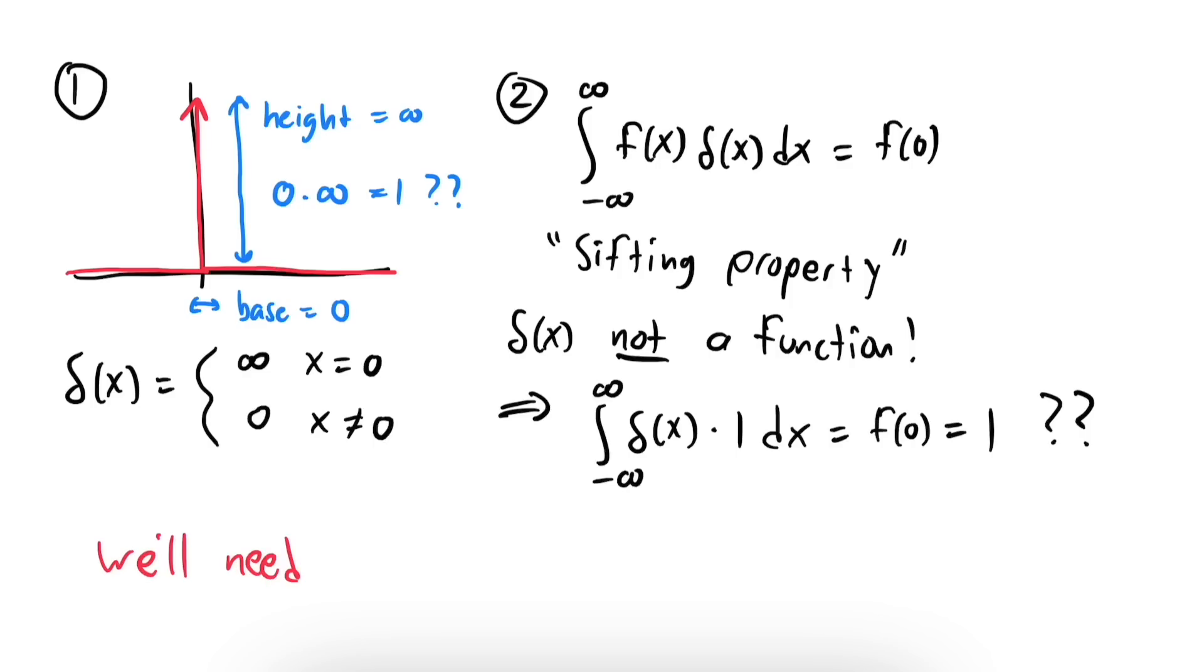To start on our journey of demystifying the Dirac delta, we'll need to reinterpret the integral entirely. Specifically, instead of thinking of integration as measuring area, we'll need to think of it as measuring mass. To do this, let's take a brief detour into measure theory, which provides us with a method of weighing sets of numbers.